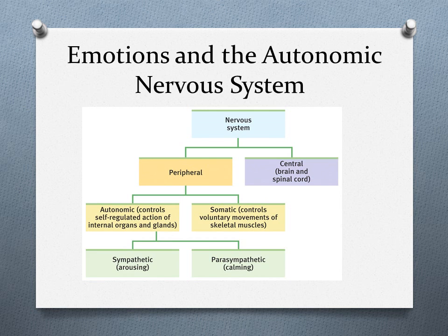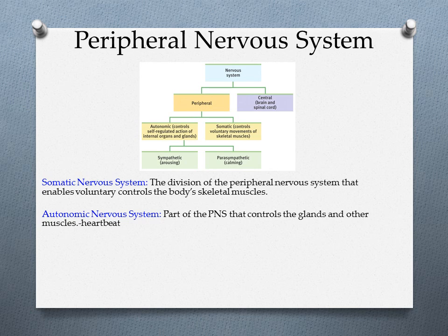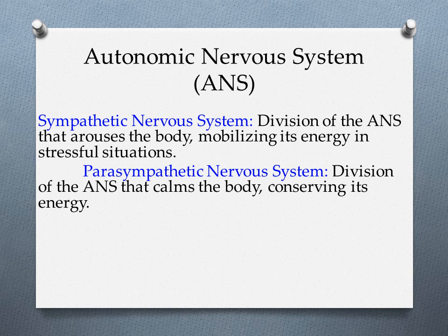Make sure you have this chart in your notes. The somatic nervous system enables voluntary movements you're aware of. The autonomic nervous system controls glands and involuntary muscles you're not so aware of — like your heartbeat, pupil dilation, and digestion.